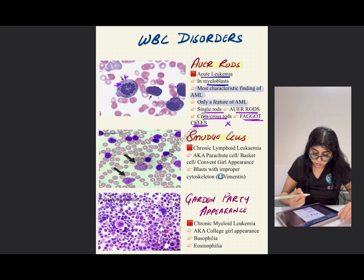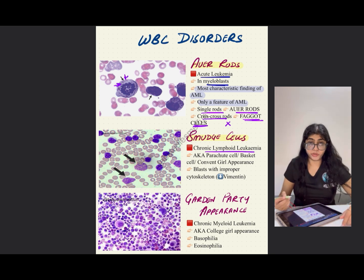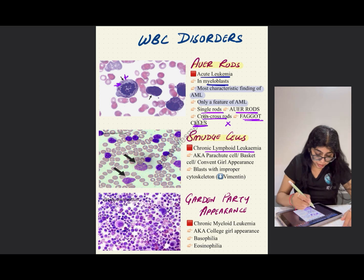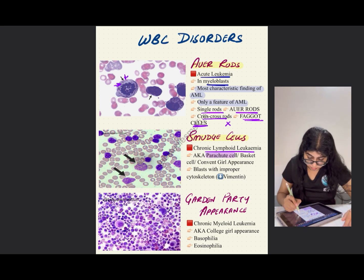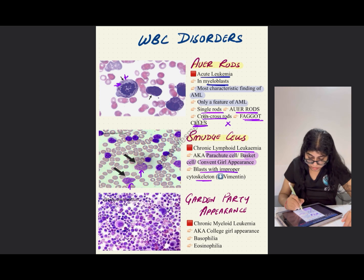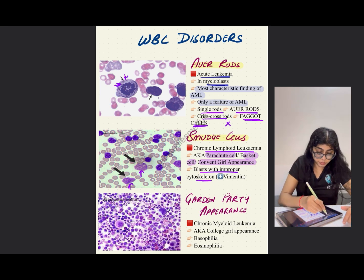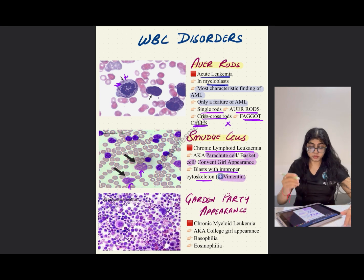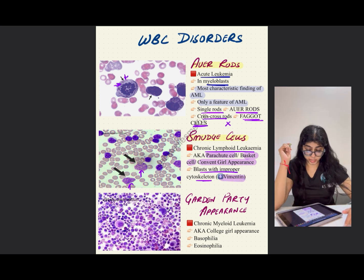Smudge cells are seen in chronic lymphoid leukemia. They are also known as parachute cells, basket cells, and Gumprecht's shadows. These are blasts with an improper cytoskeleton in which the protein vimentin is deficient — very important to remember for the exam.